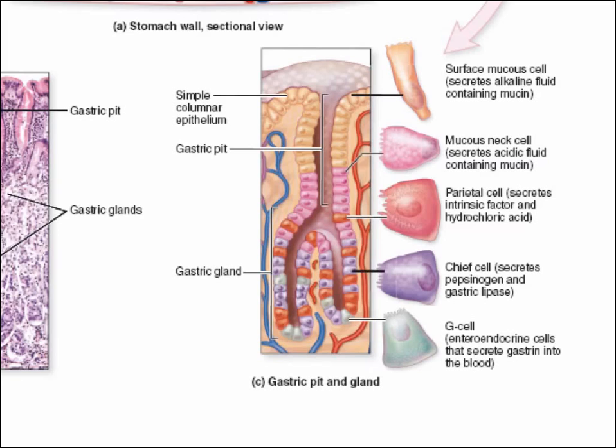Of these five cell types, four of them are involved in secreting at least three liters of gastric juice each day. And one, the G cells, are hormone-secreting cells.